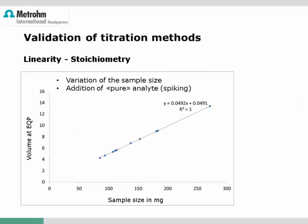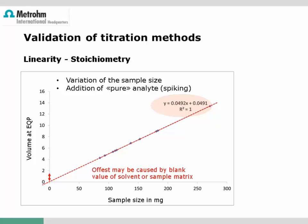For validation of the designated application, the same procedure may be applied: several different sample sizes are titrated and the recovery is calculated. Important is also checking linearity — the volumes at the equivalence points for different sample sizes should be on a straight line with a good regression factor, and extrapolation to zero sample should exactly cross the zero point of both axes. If this is not the case, either the stoichiometry of the chemical reaction is not the same for all sample sizes, or the sample matrix or solvent shows a blank value, which would then have to be considered for each titration.